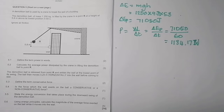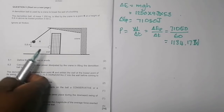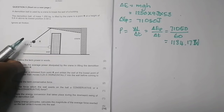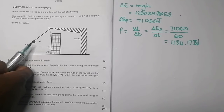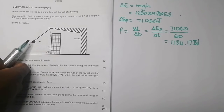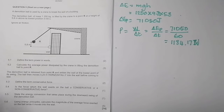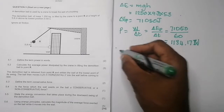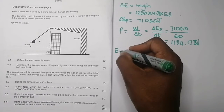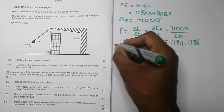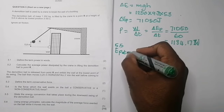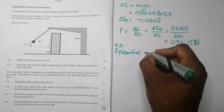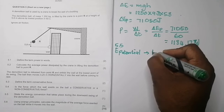They ask us to state the energy conversion during the downward swing of the ball. As it swings down, it gains speed, losing potential energy and gaining kinetic energy. So the energy converts from gravitational potential energy to kinetic energy.